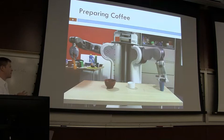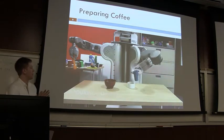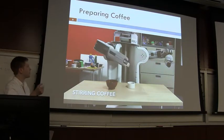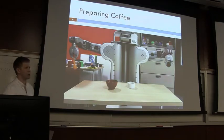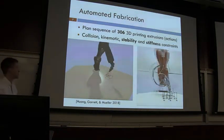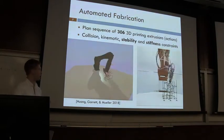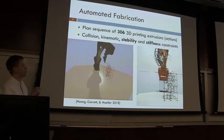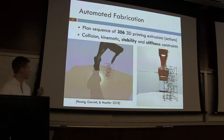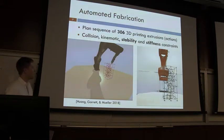We can also reason about tasks involving cooking coffee, with dynamic skills like pouring, scooping, and stirring. When transporting a cup, the robot must keep orientation upright, otherwise material will fall out — a constraint automatically incorporated in the motion planner. Finally, motivated by architectural applications involving 3D printing structures in space, the robot must consider colliding with the tower it's building, stability of assignments, and stiffness — all constraints that must be taken into account to plan a successful trajectory.